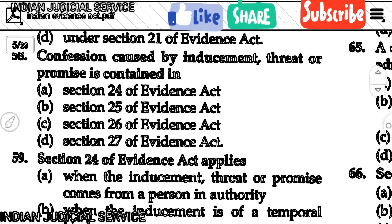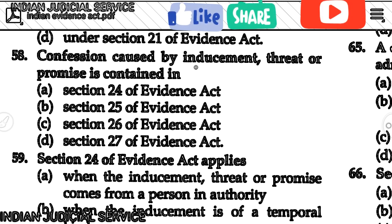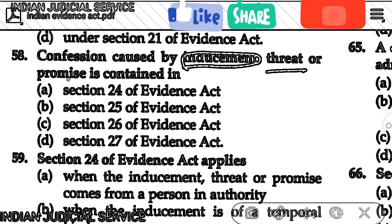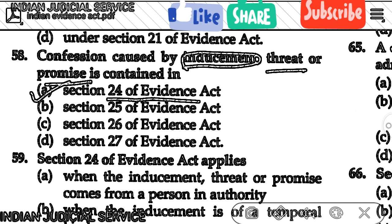Question number 58: The confession caused by inducement, threat, or promise is contained in which section? The answer is Section 24. Section 24 provides that if a confession is made during inducement, threat, or promise, such confession is irrelevant — especially when the inducement, threat, or promise is given by a person in authority.